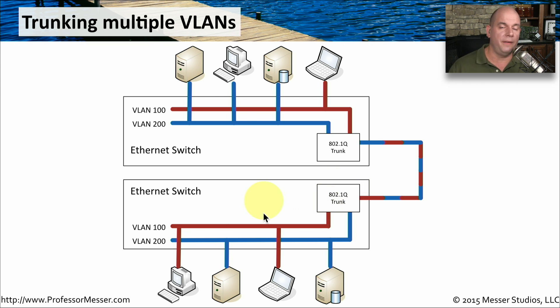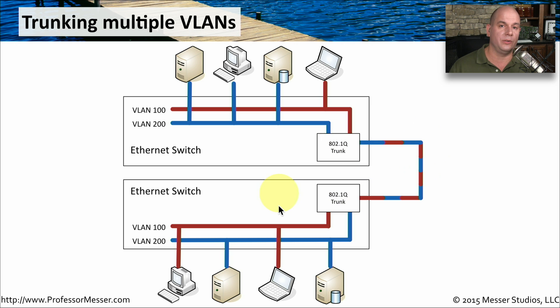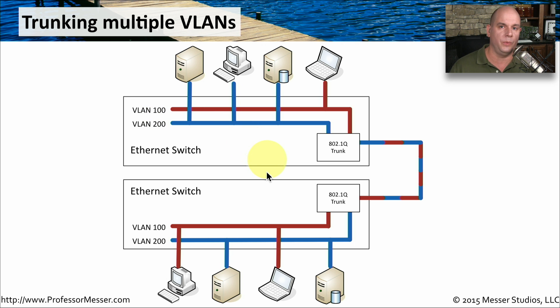To send traffic in the other direction, the exact same process is performed in reverse. All information going through this particular link that is tagged will be tagged with VLAN 100 or VLAN 200 associated with it.